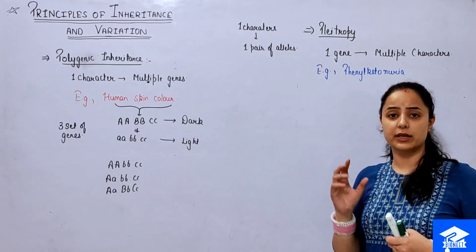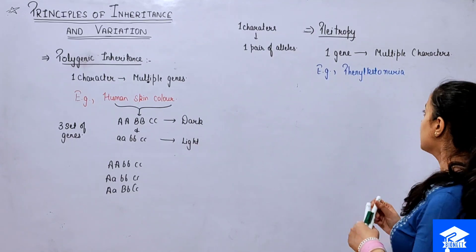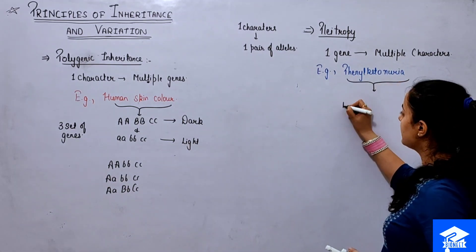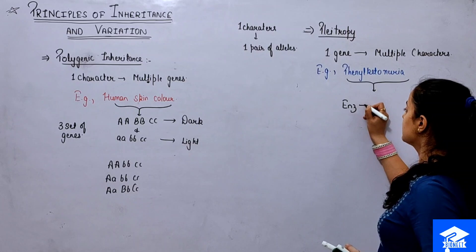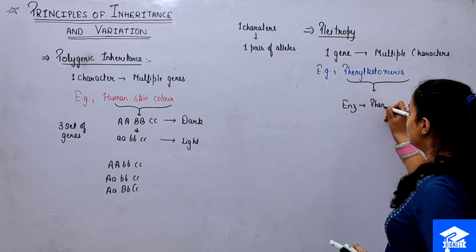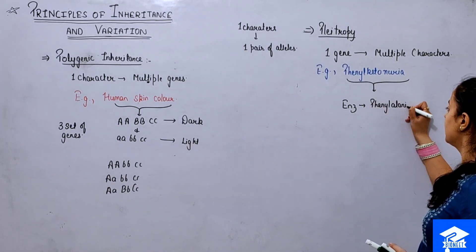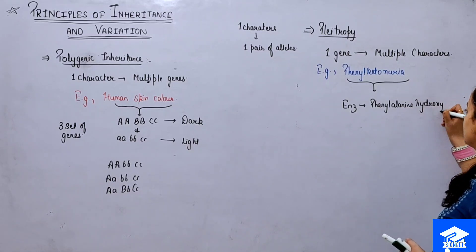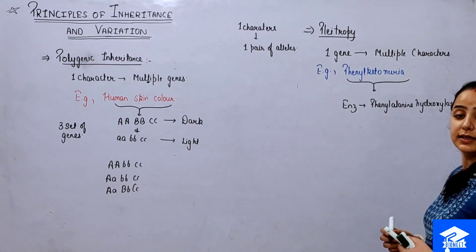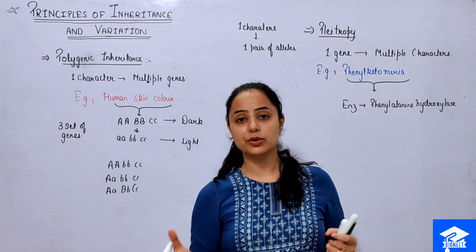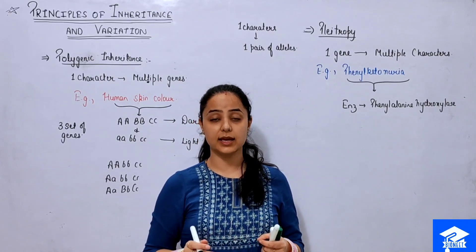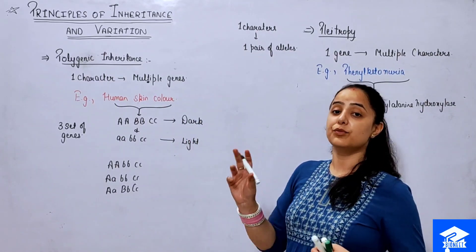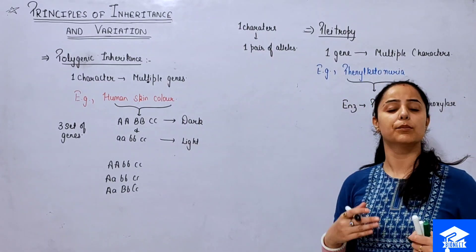In phenylketonuria, due to a problem with a single gene, the enzyme phenylalanine hydroxylase is not produced. Normally, this enzyme converts phenylalanine to tyrosine, which the body can then process and control. But in this disease, that conversion does not happen.